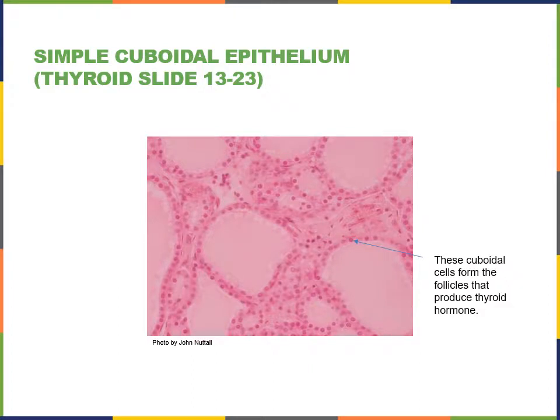Here's another example of a simple cuboidal epithelium — this one is in the thyroid gland. The thyroid gland is an example of an endocrine gland, a gland that produces a secretion that travels through the blood as a hormone to regulate the function of other organs. The follicle cells, which are simple cuboidal epithelium, produce thyroid hormone stored in the follicle and then released to travel through the body, stimulating metabolism to increase metabolic rate and produce heat to warm the body.